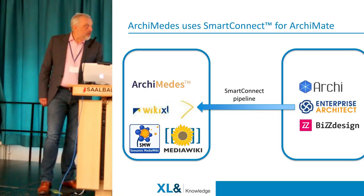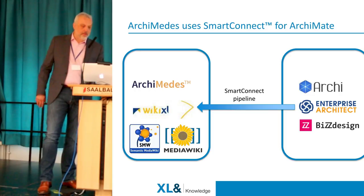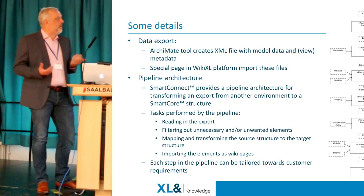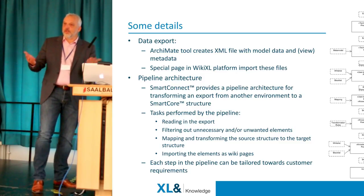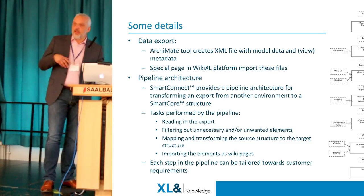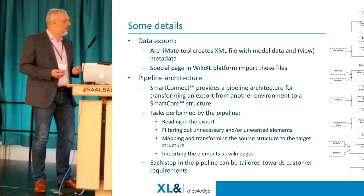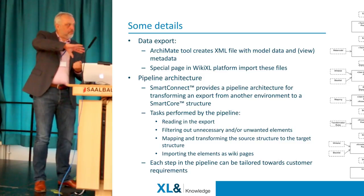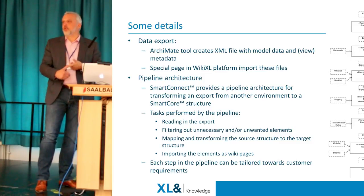The data export gives us an XML file with all kinds of model and view data. It's not only metadata about architecture, but also the models themselves and the views — the pictures — which we build with those specifications from the XML. We have a special page in our platform to import these files, and the pipeline architecture transforms it to our own structure and allows all kinds of custom-tailored things like filtering or adding information. We can do this on both the import and export side, and we can extend it for customers if needed.